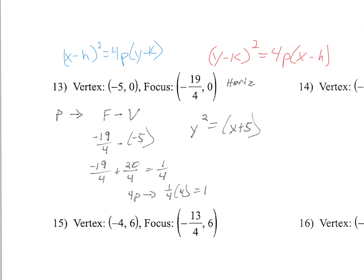Now let's look at number 13. We're given the vertex at (−5, 0) and the focus at (−19/4, 0). The x value is what changed from the vertex to the focus, so we know it's horizontal. To find p, subtract the vertex from the focus: −19/4 minus −5 = −19/4 + 20/4 = 1/4. So p = 1/4, and 4p = 1/4 × 4 = 1.